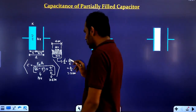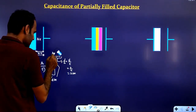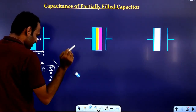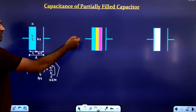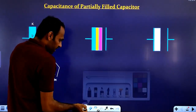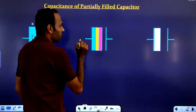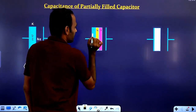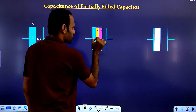So finally we got to know the effective capacitance of this partially filled capacitor. In the next case, I have taken three dielectrics. This is the first, this is the second, and this is the third dielectric medium, with dielectric constants K1, K2, and K3.